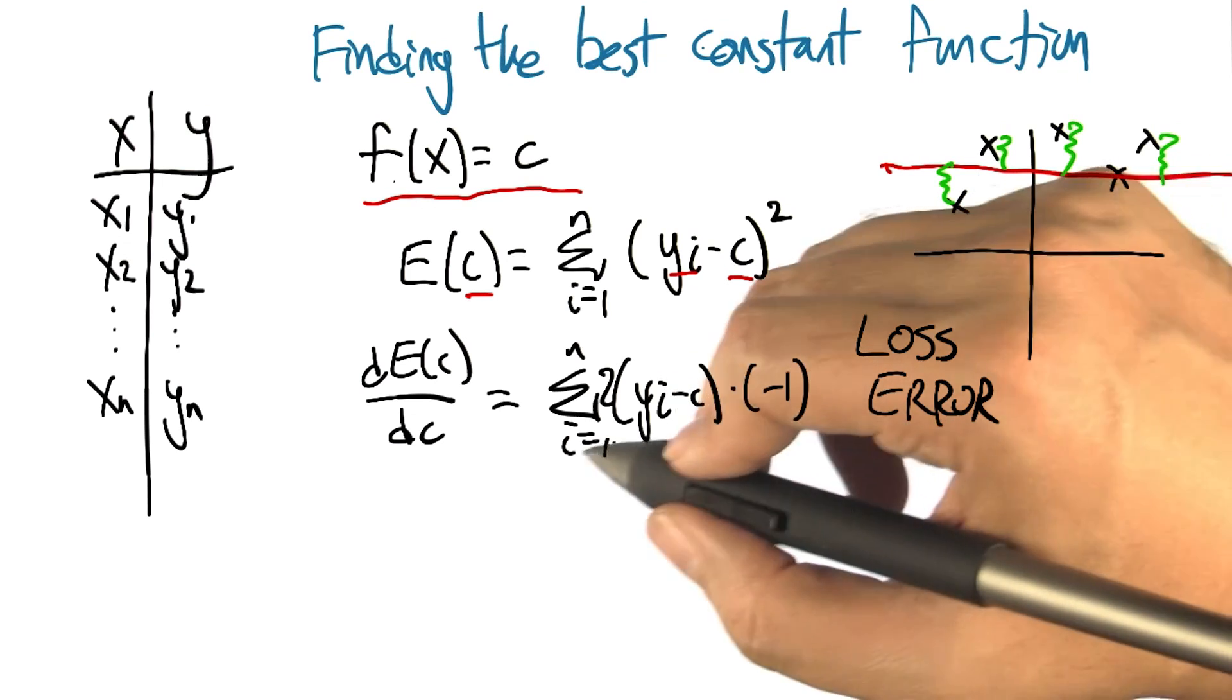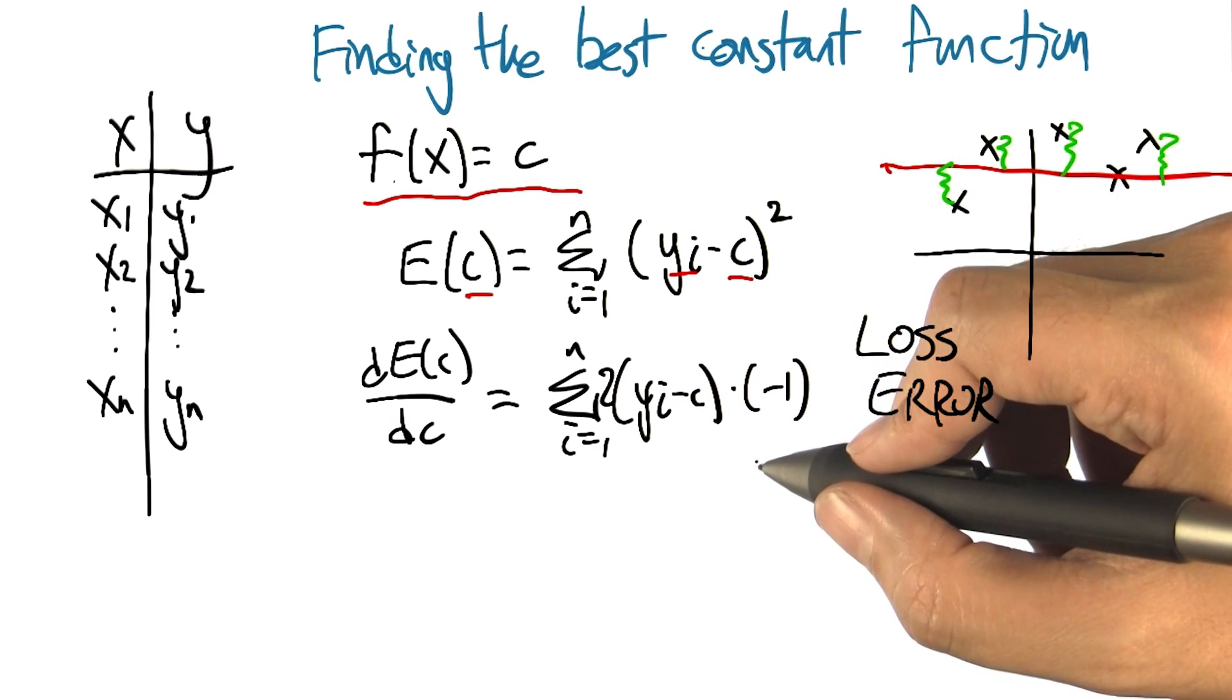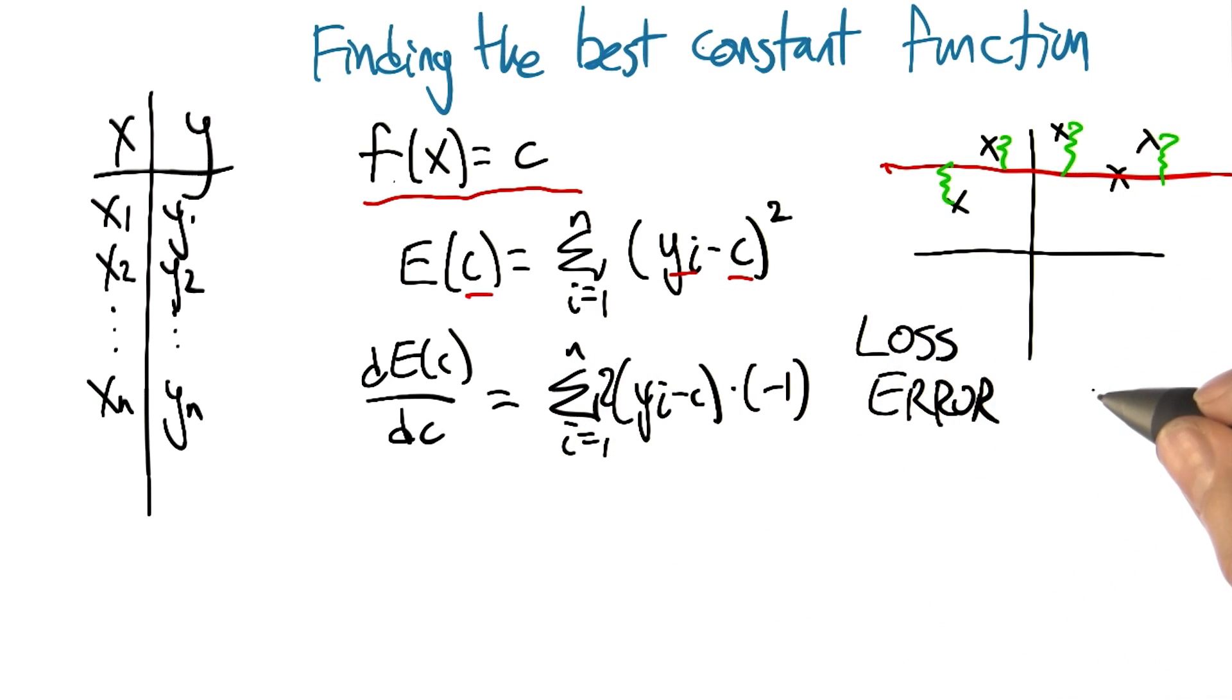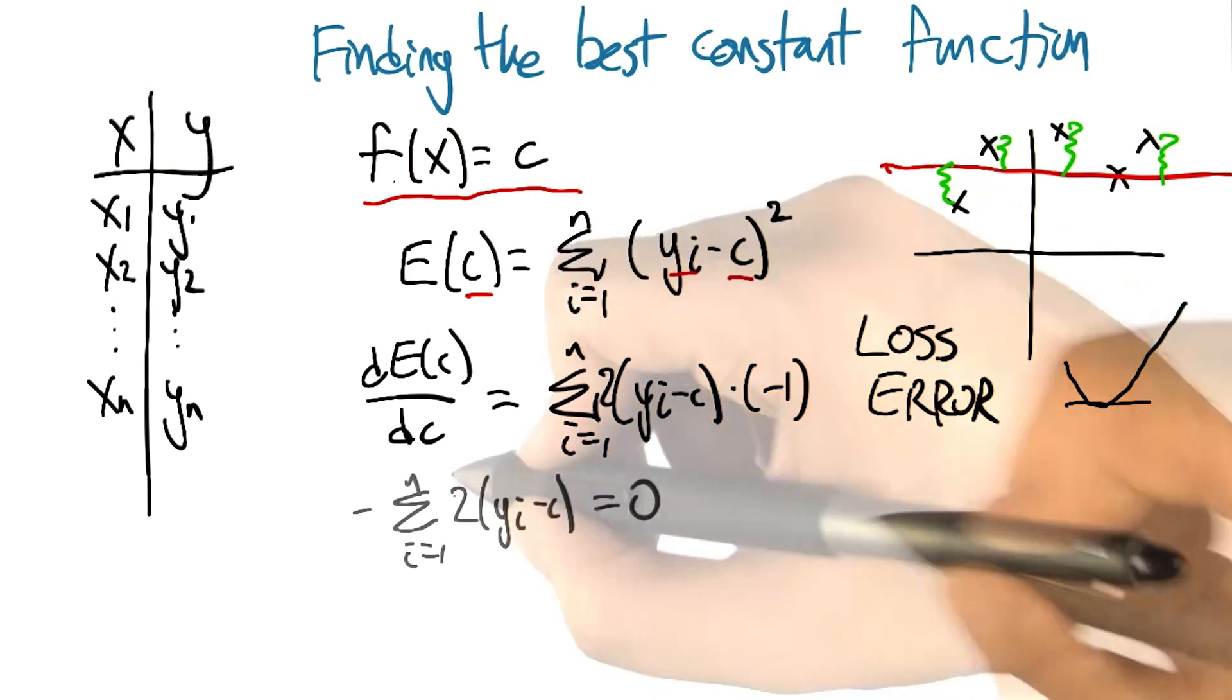And if we want to find the minimum, what do we have to do to this quantity? You set it equal to 0 because that's what I remember from calculus. That's right. So in particular, if the error function is this nice smooth thing, the derivative is negative and then 0 and then positive. When it hits 0, that's when the thing has bottomed out.